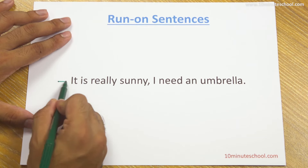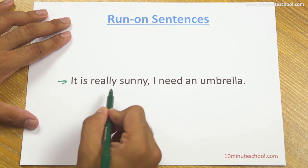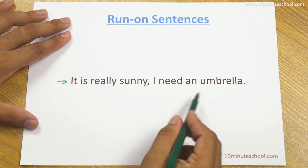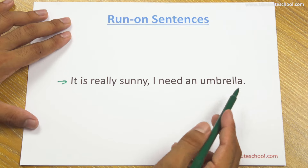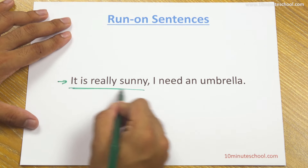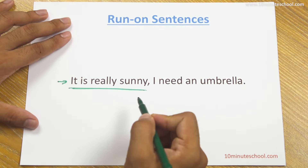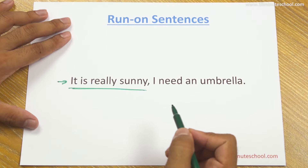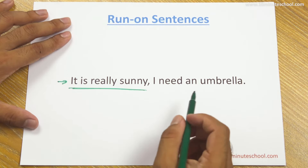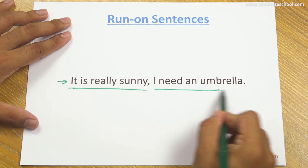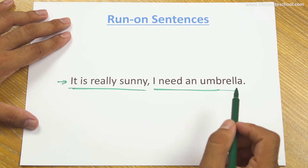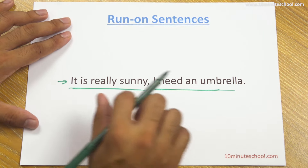We will see this sentence: 'It is really sunny.' 'I need an umbrella.' Let's see — 'It is really sunny.' This is a proper sentence. It is an independent clause. 'I need an umbrella' — this is also an independent sentence.